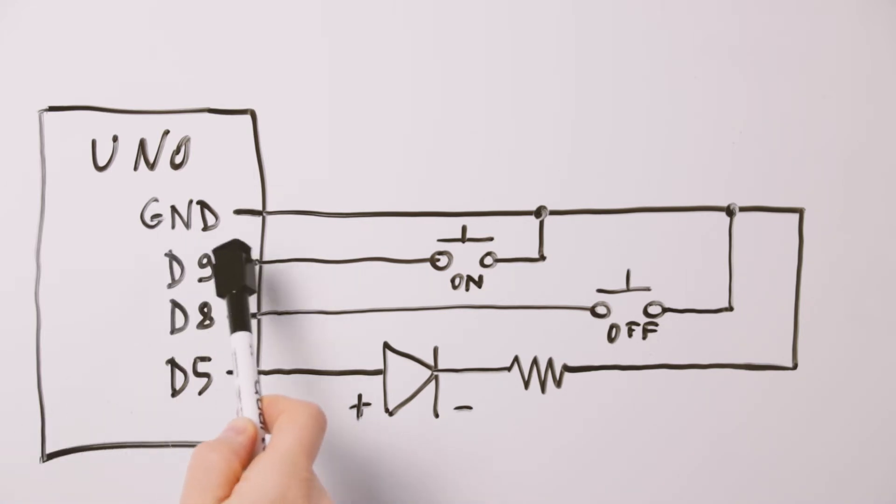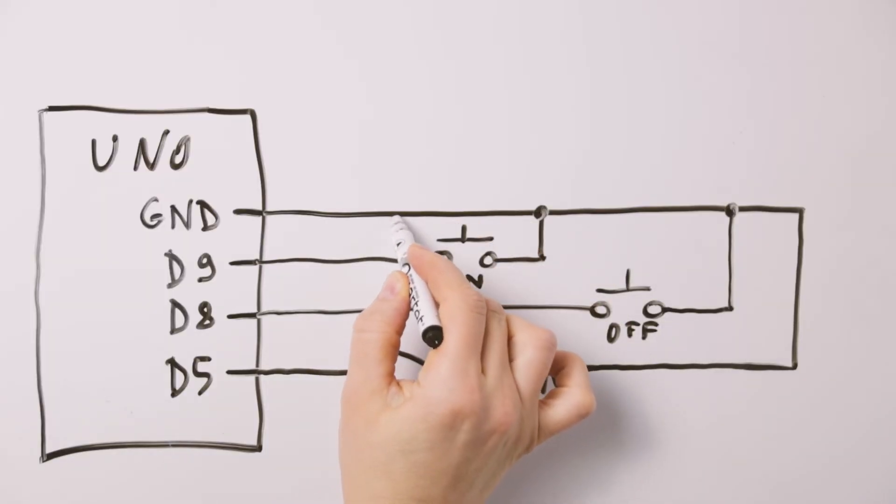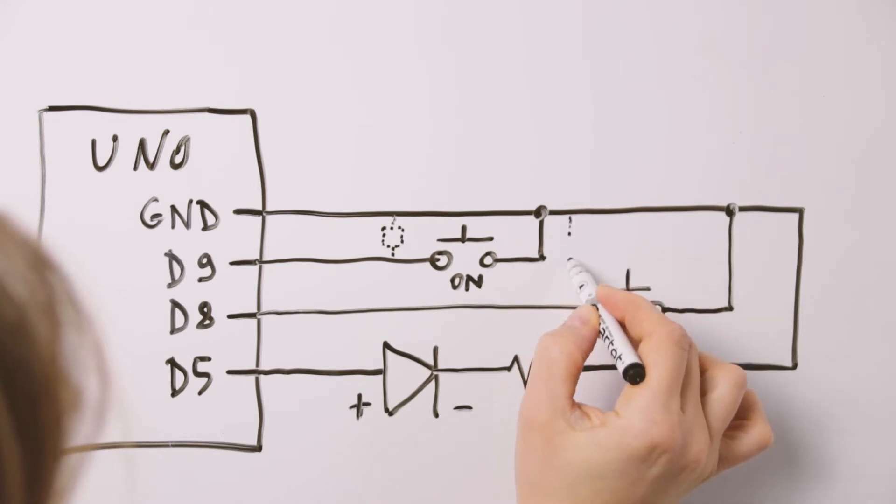D9 will have the on push button and D8 will have the off push button. They will be set up as input pull up pins. Input pull up pins access the built-in pull up resistors on the board whose value is between 20 and 50 kilo ohm. This is the main difference from the input pins.